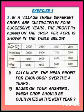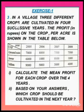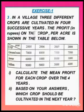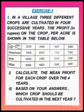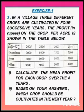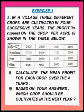Let us continue with the same exercise sums, the third sum. In a village, three different crops are cultivated in four successive years. The profit in rupees on the crops per acre is shown in the table below. They have given four years: 2005, 2006, 2007 and 2008. The profit of groundnuts over the four years is 7000, 8000, 7500 and 7500.